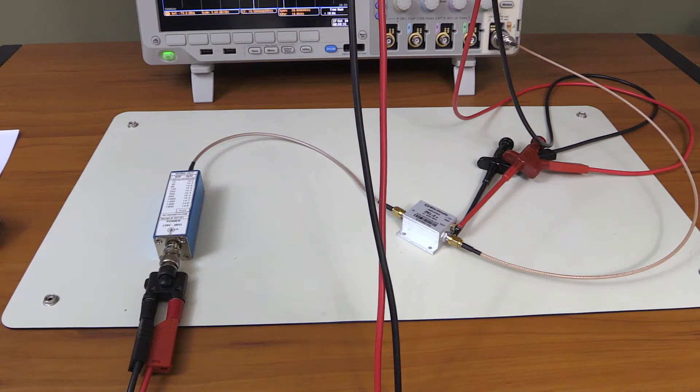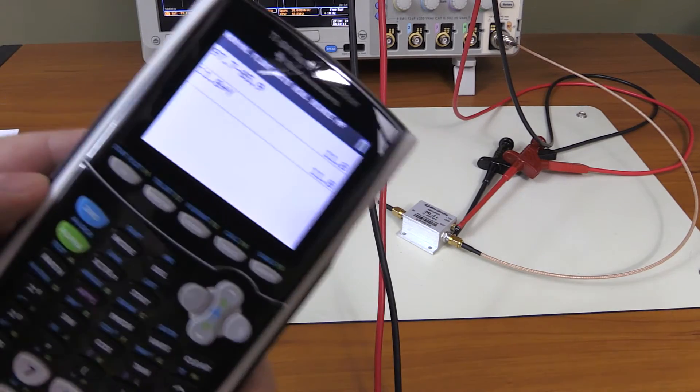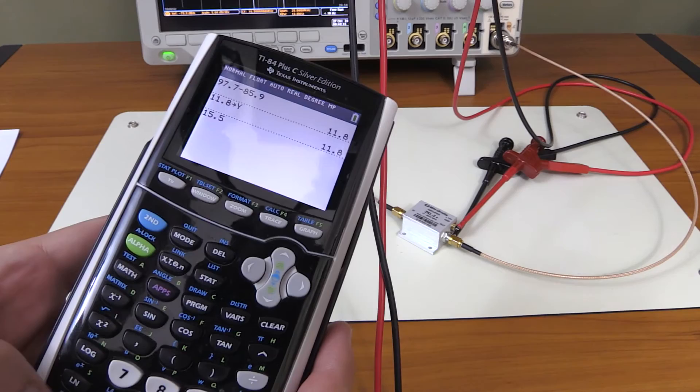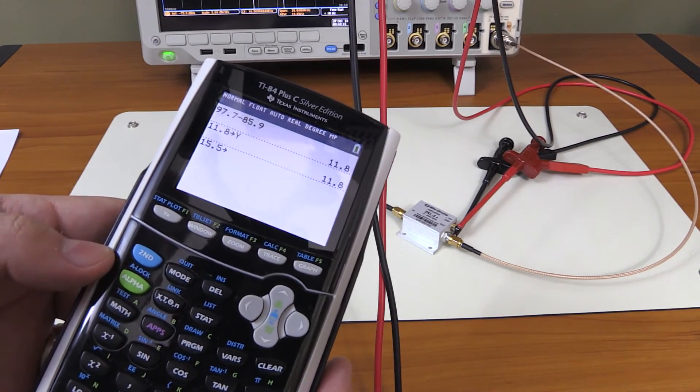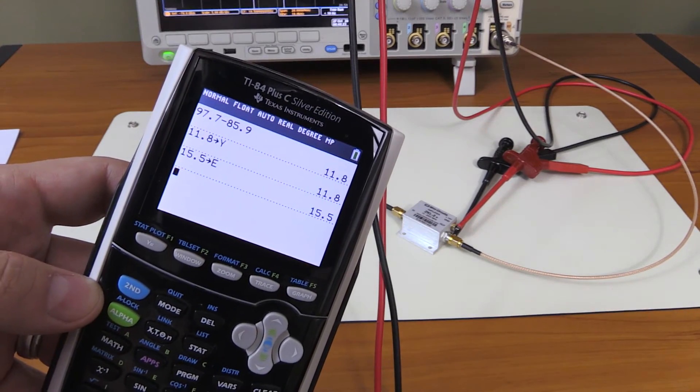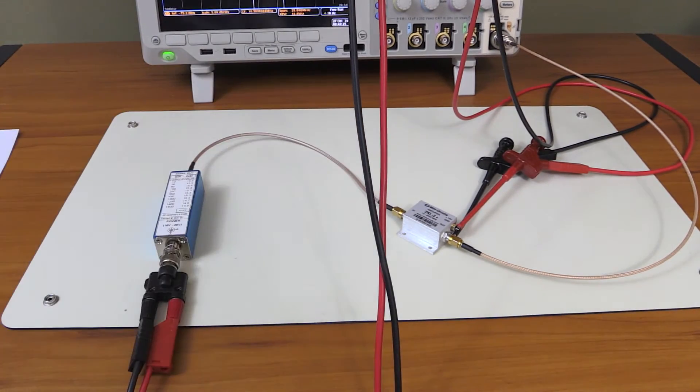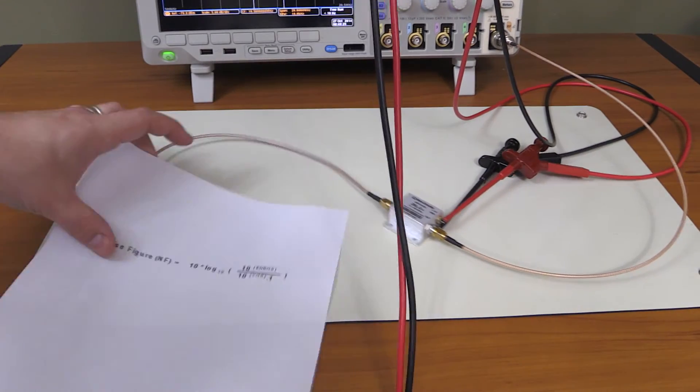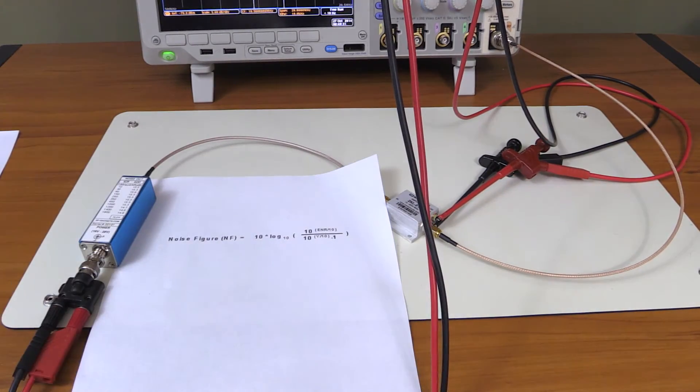We know 15.5 is going to be our ENR. Same here: 15.5, I'm going to store it in a variable. Let's call it E, like this. Store, done. Now I need to copy this formula into the calculator. Give me one second to type here.